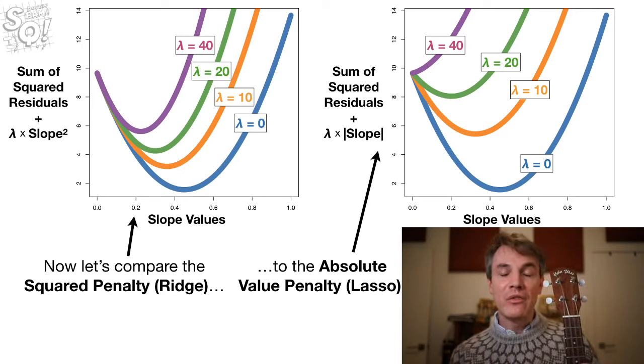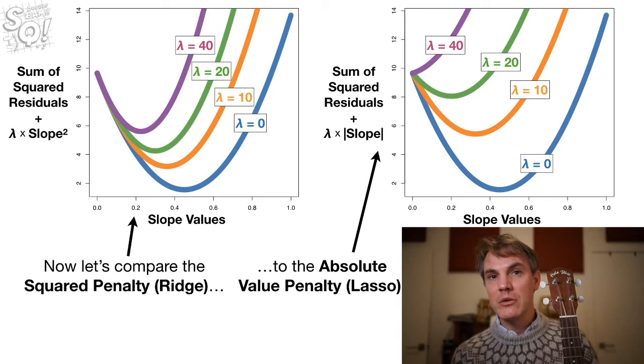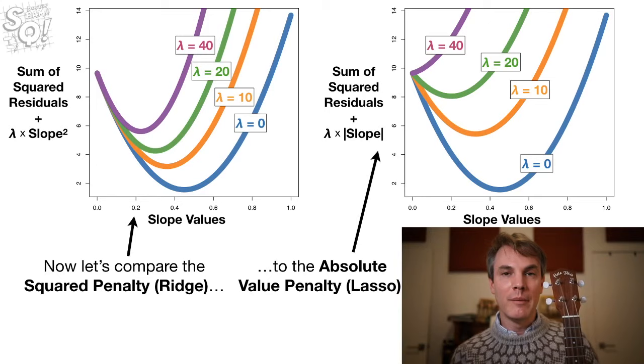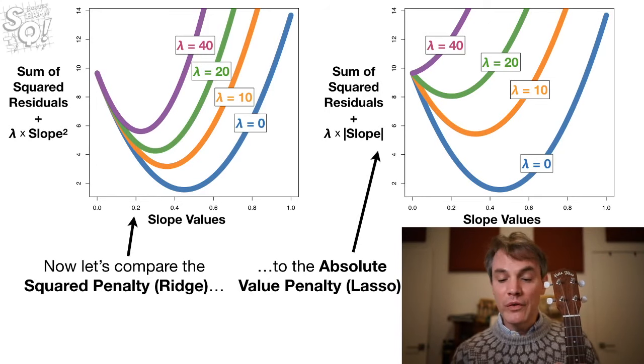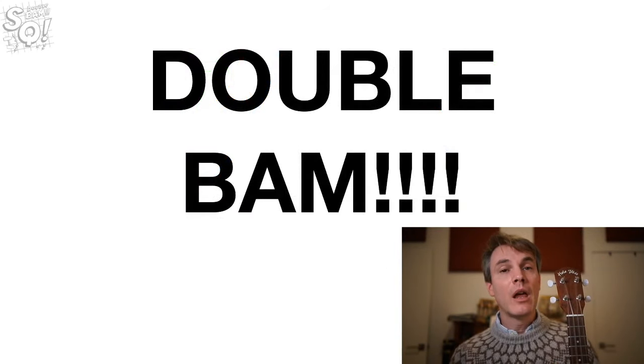So, those are the two big differences between the squared ridge penalty and the absolute value lasso penalty. And I hope these visualizations helped. I've seen other visualizations out there. I'll be honest, they don't make as much sense as these do to me. So, hopefully that was helpful. Double bam!